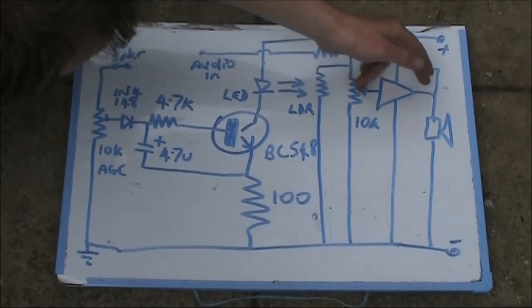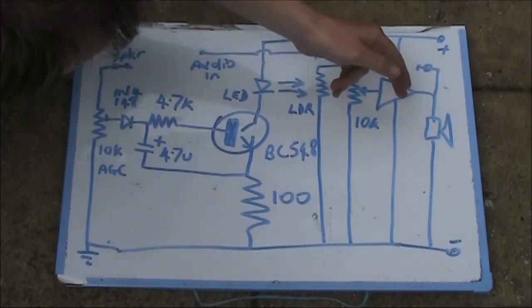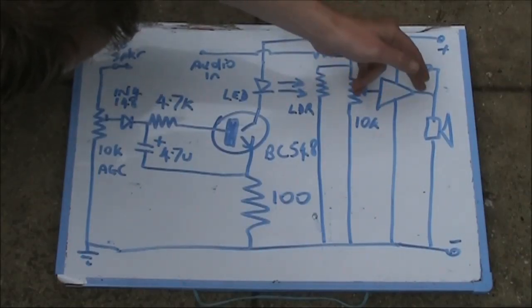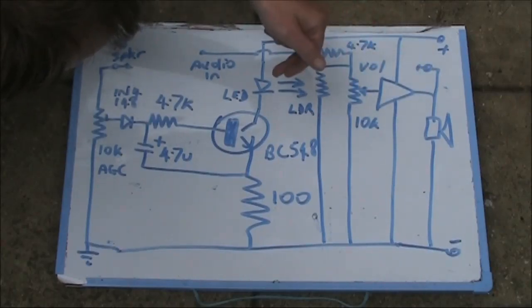That forms a voltage divider and reduces the audio level present at the audio amplifier's input. In doing that, it reduces the output, thus providing an audio compression, reducing the amplified output when a signal presented is loud.